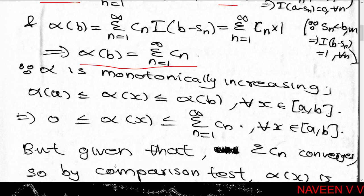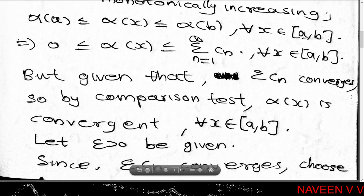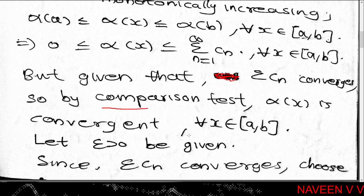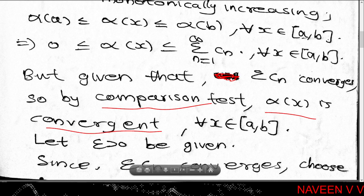From the inequality, 0 ≤ α(x) ≤ Σ(n=1 to ∞) cₙ for each x in [a,b]. Since Σcₙ is a convergent series, by the comparison test, α(x) = Σ(n=1 to ∞) cₙ · I(x - sₙ) is a convergent series.